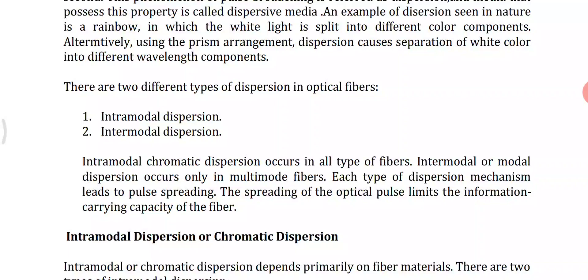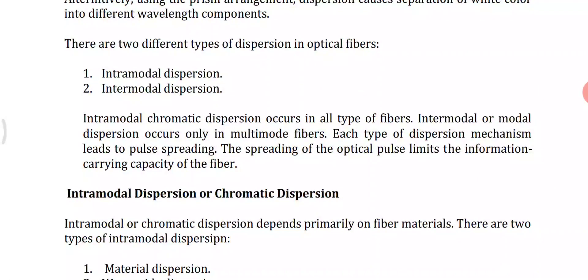Dispersion refers to the spreading of light pulses when propagating through long distances. It also introduces inter-symbol interference — some interference between light pulses — and it limits the information-carrying capacity of a fiber. Intramodal dispersion is a pulse spreading that occurs within a single mode. It occurs in single-mode fibers and sometimes in multimode fibers as well.